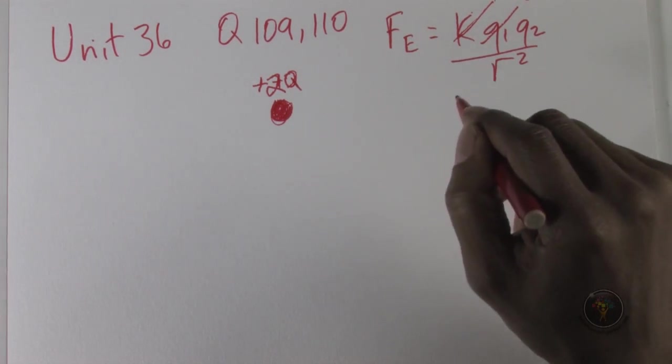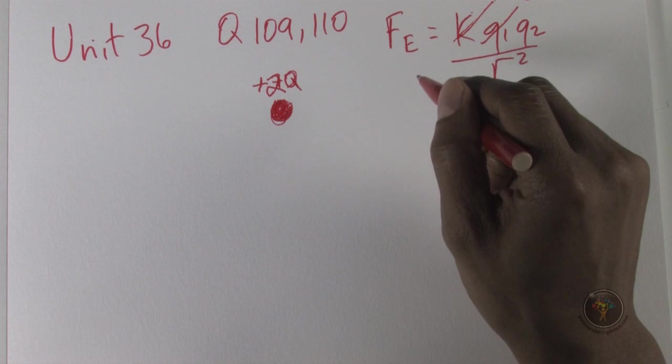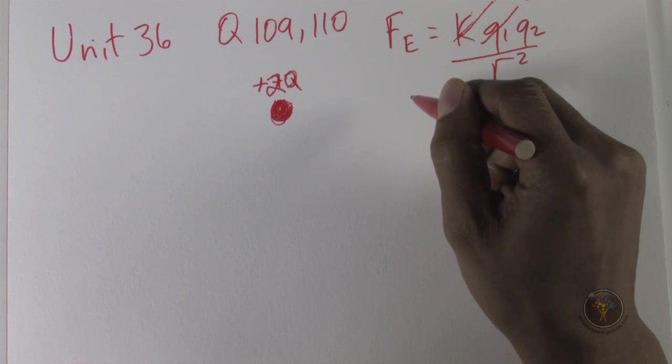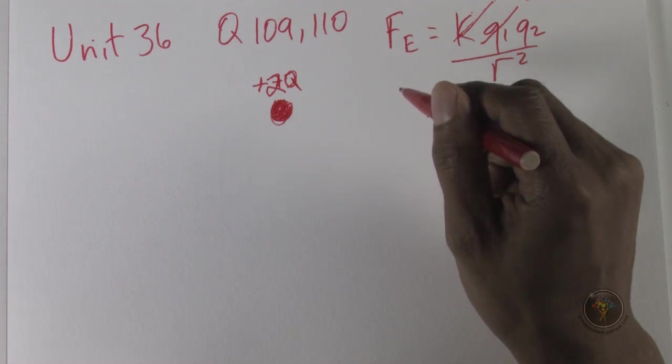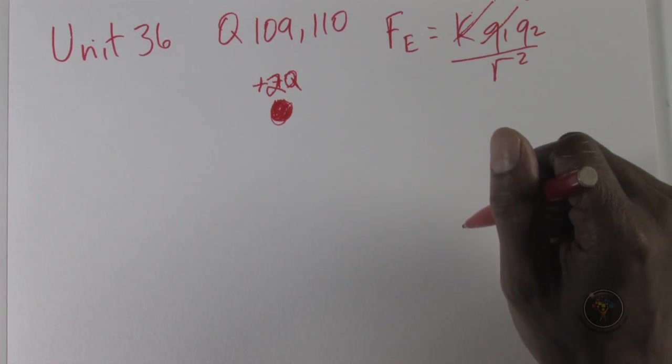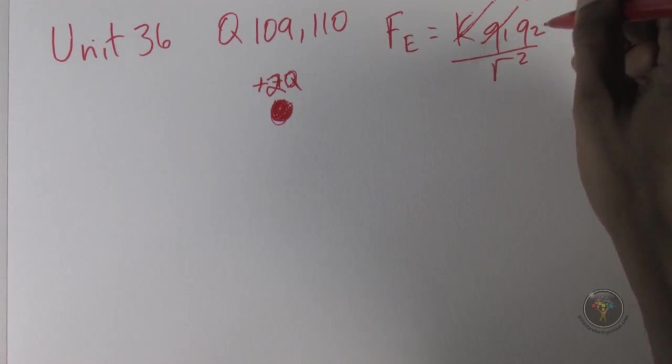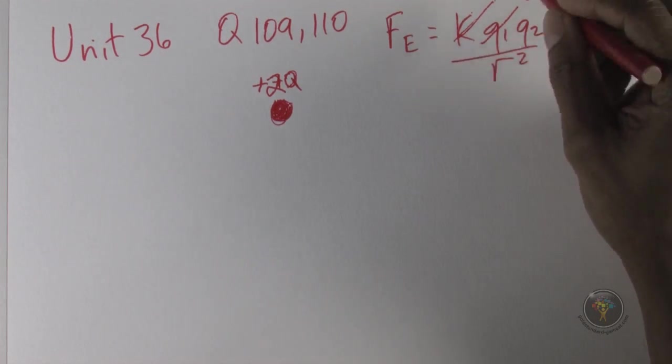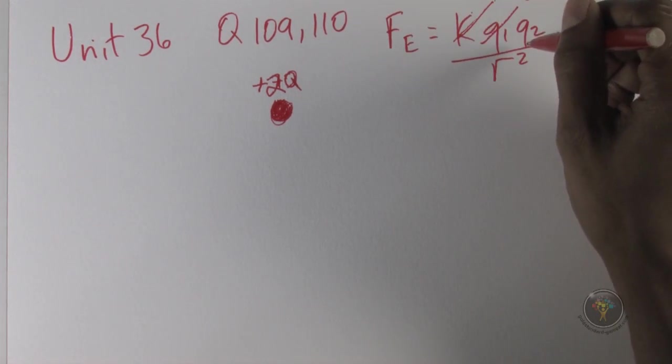So if this q all of a sudden becomes 3, how do we keep this force even or constant? Well, if this q becomes times 3, the only way to keep this constant is that we get r times root 3.